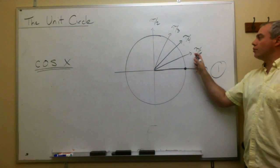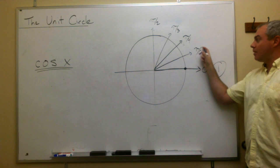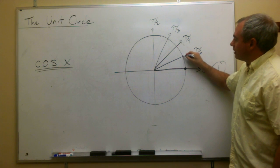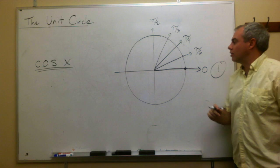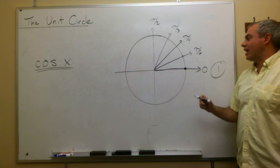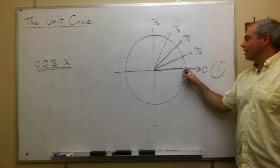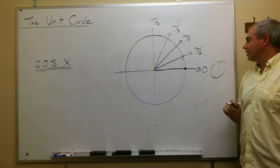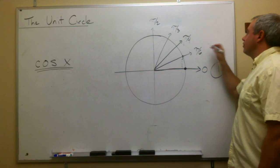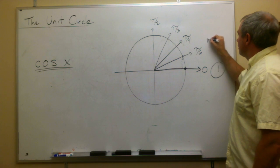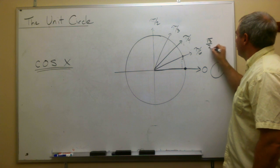If we want to talk about the cosine of the angle pi over six, what we're really saying is at this point on the unit circle, what is the x value? And the x value, you can see it's a number that's in between zero and one, and it's closer to one than it is to zero. And the value that the x value of that point is the square root of three over two.